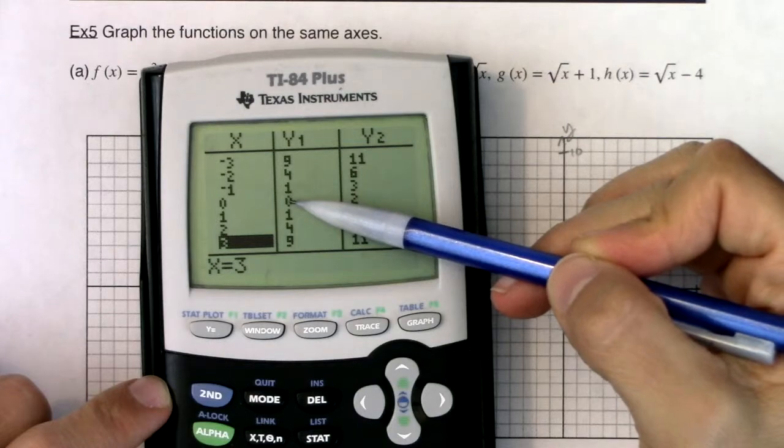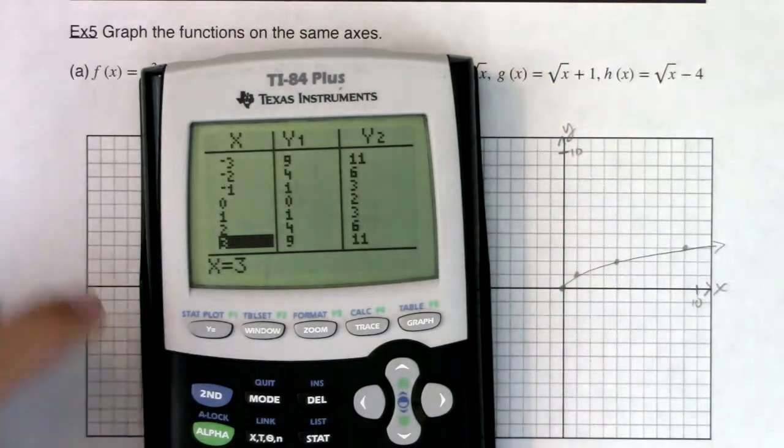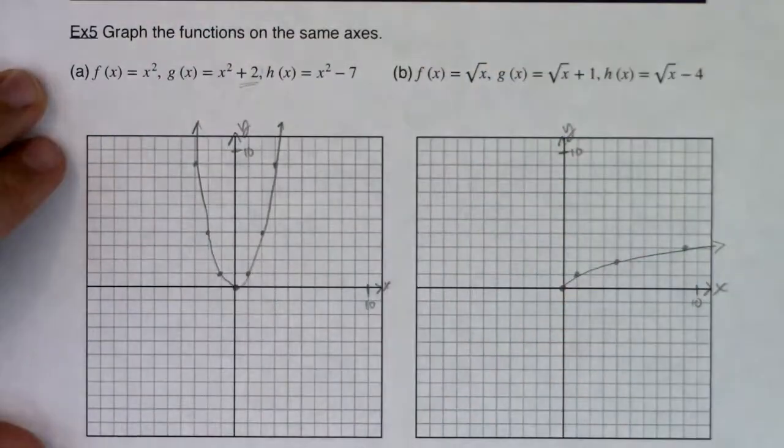So instead of my vertex being at zero, zero, it's now zero, two.